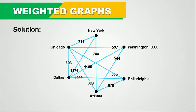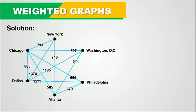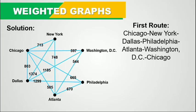Now we'll find a Hamiltonian circuit as asked in the problem. For Road 1, we start from Chicago, go to New York, then to Dallas, then to Philadelphia, then to Atlanta, then to Washington DC, and then return to Chicago. This is a Hamiltonian circuit. Watch the Hamiltonian circuit video first if you need to understand the concept.